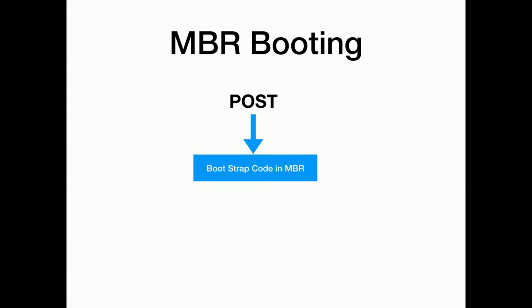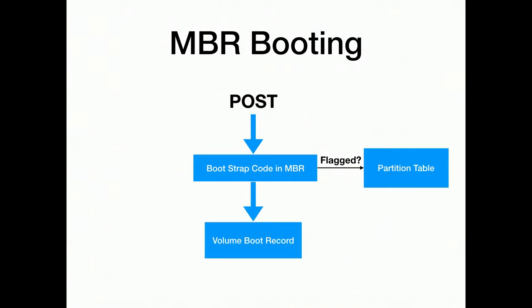When you turn on an older PC, you get POST — power on self-test — the screen flickers, then it looks for the master boot record and starts executing that code. It checks whether a partition has a flag; if it does, it passes control off to the volume boot record, which starts booting Windows. It can fail in a lot of different places: if you don't have a flagged partition, no volume boot record, or no master bootstrap code — on a Mac or PC when disks are first formatted, those aren't there. A completely black screen usually means no bootstrap code; 'insert diskette' means no volume boot record or the partition isn't flagged.